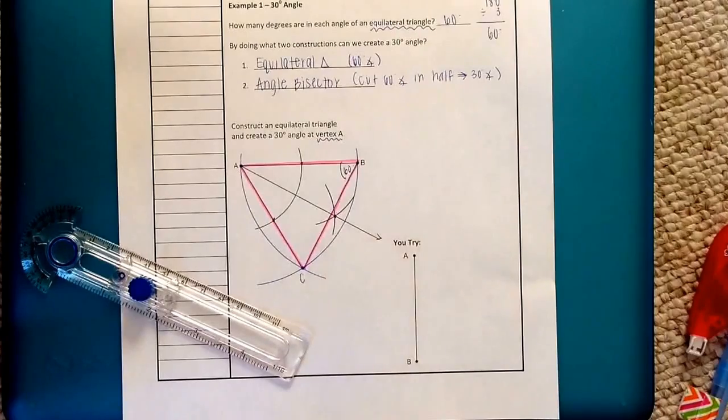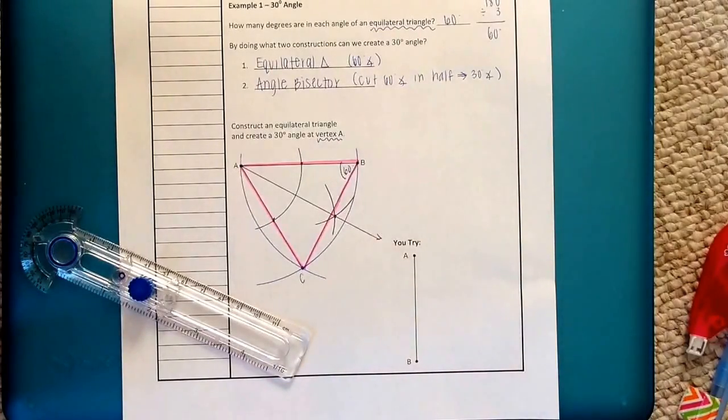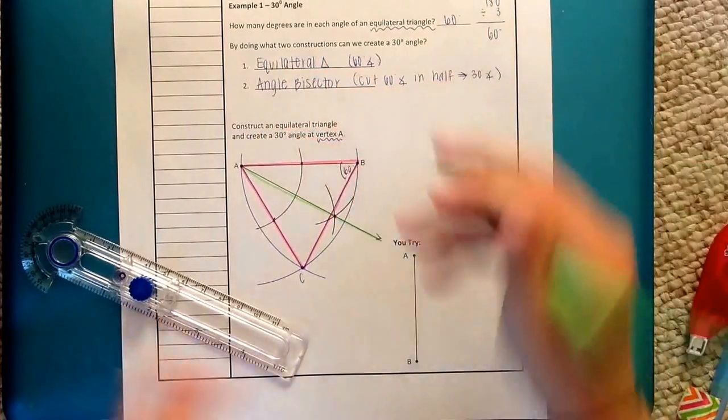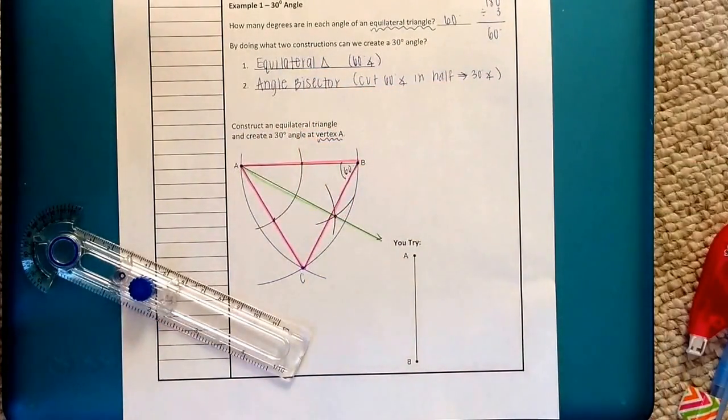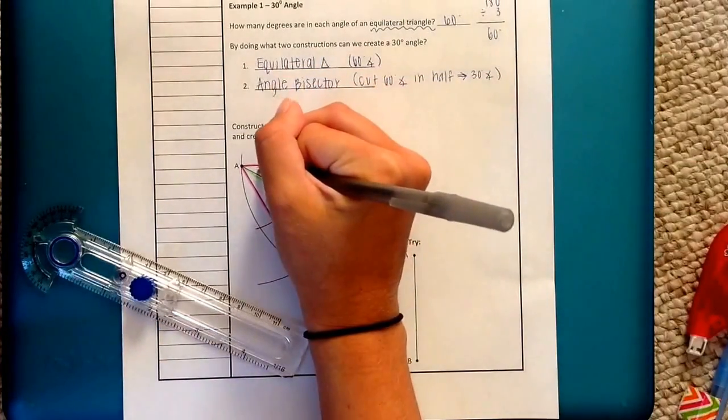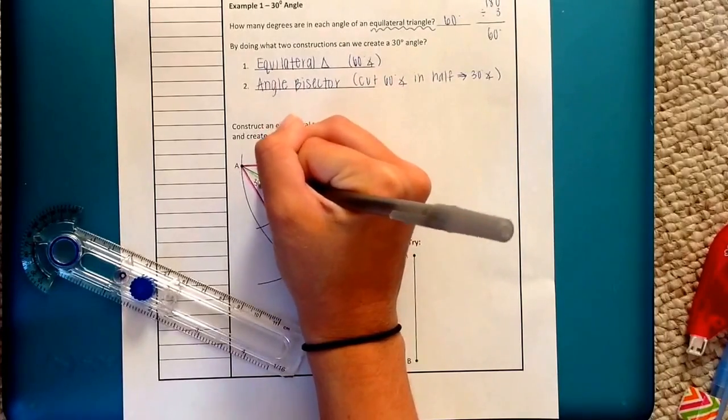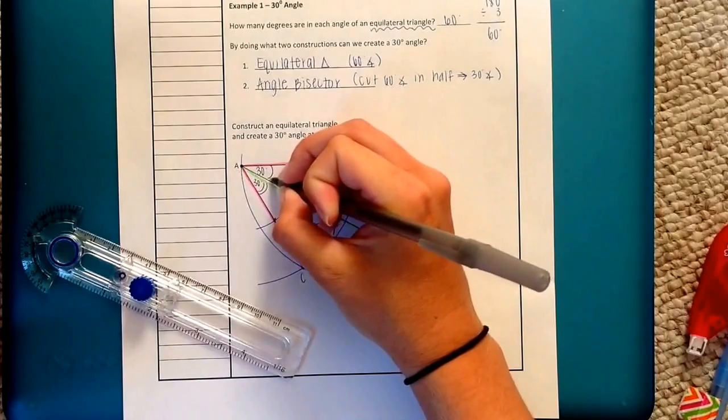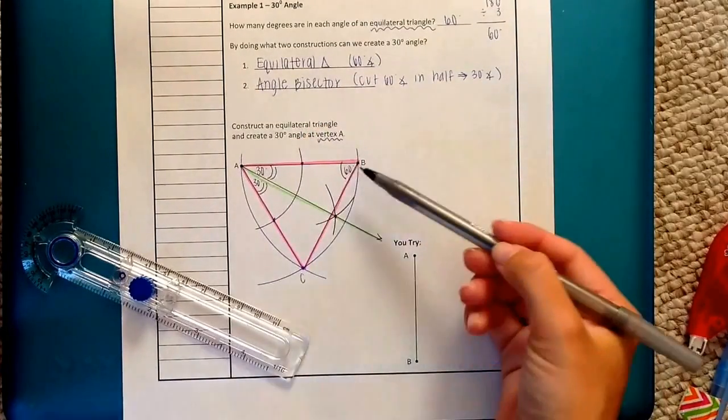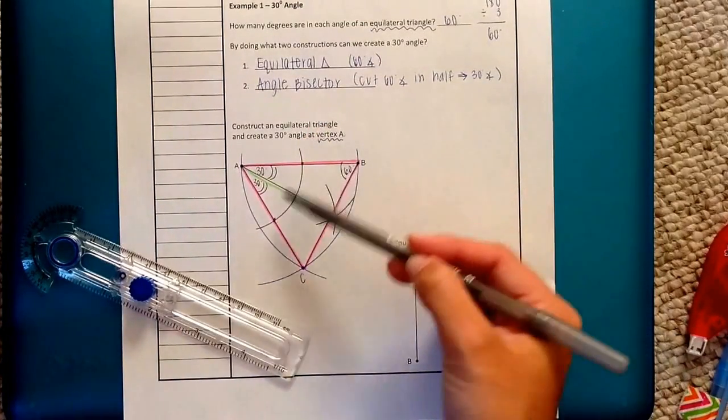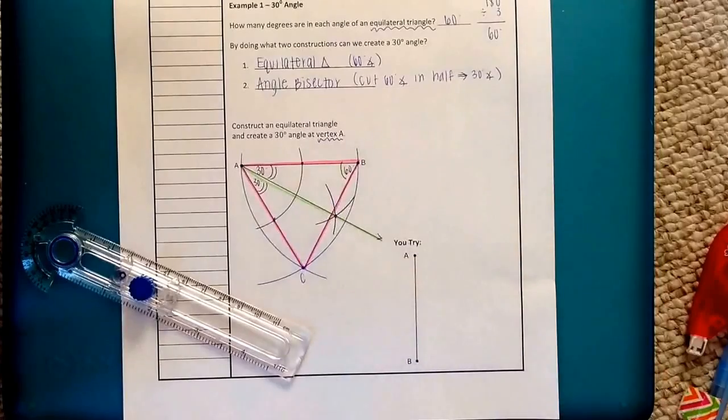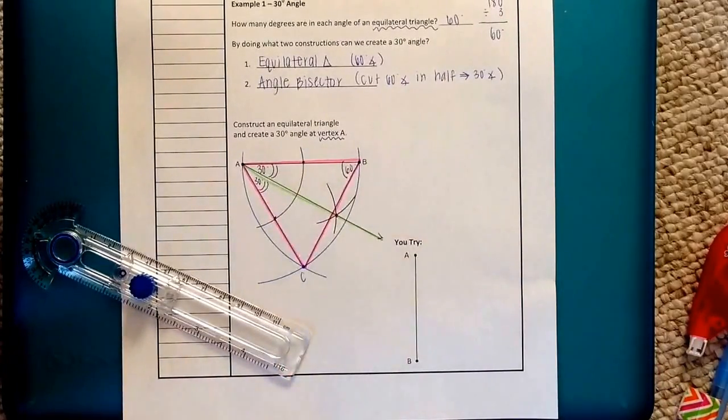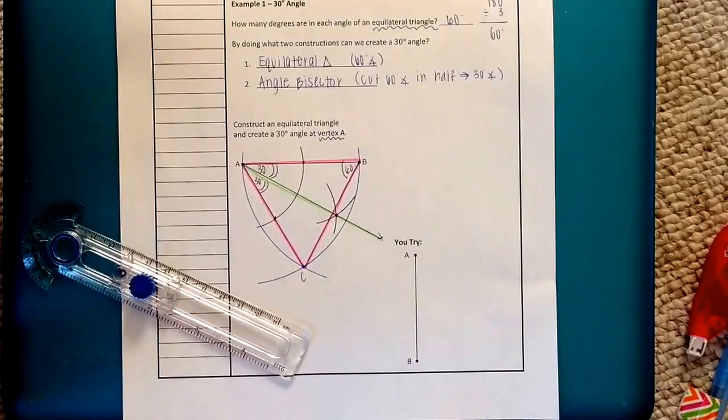So then like I said I like to highlight whatever I've just done. So I'm going to use a different color to highlight my angle bisector. And what we just created were 30 degree angles at vertex A. I'm actually going to put two arc marks on here. Notice at 60 degrees I had one arc mark. At 30 degrees I had two because 60 is very different from 30 degrees. But the 30 degree angles are the same as one another so they can both get two arc marks.